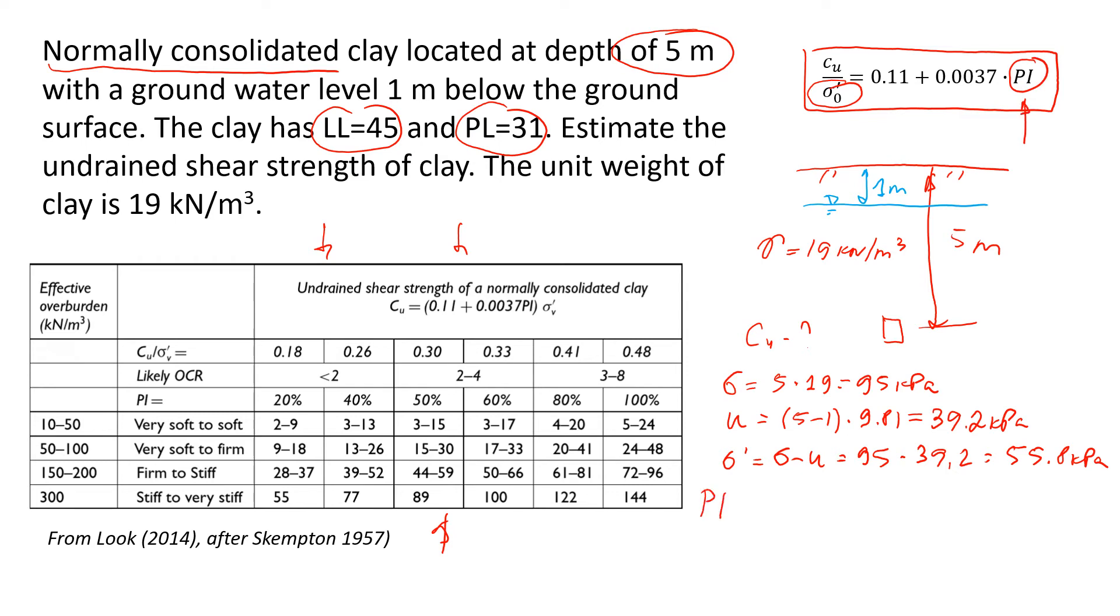If you know this, and if you have watched my previous videos about soil plasticity, you know that plasticity index is liquid limit minus plastic limit. So in this case will be 45 minus 31 will give us 14.